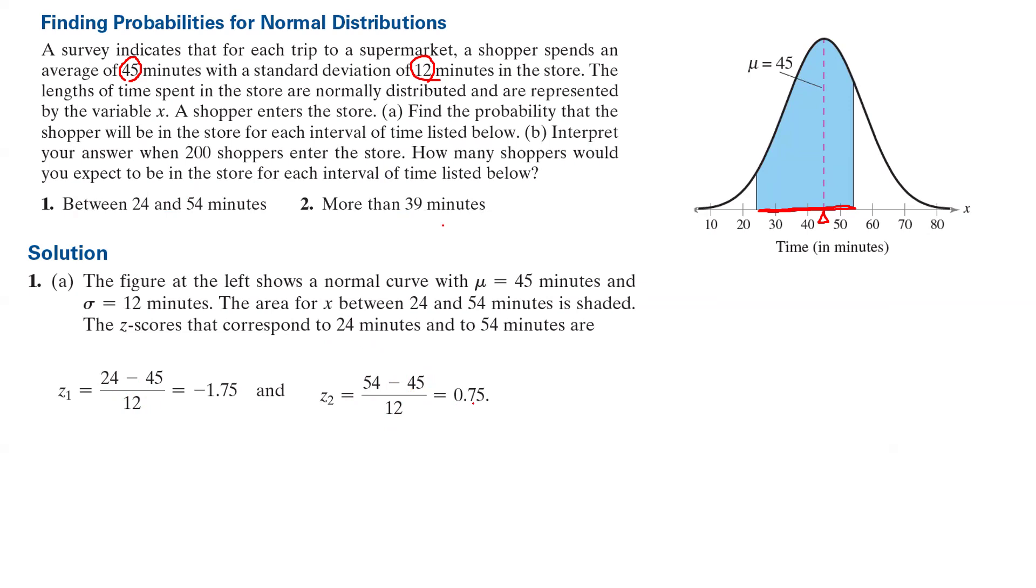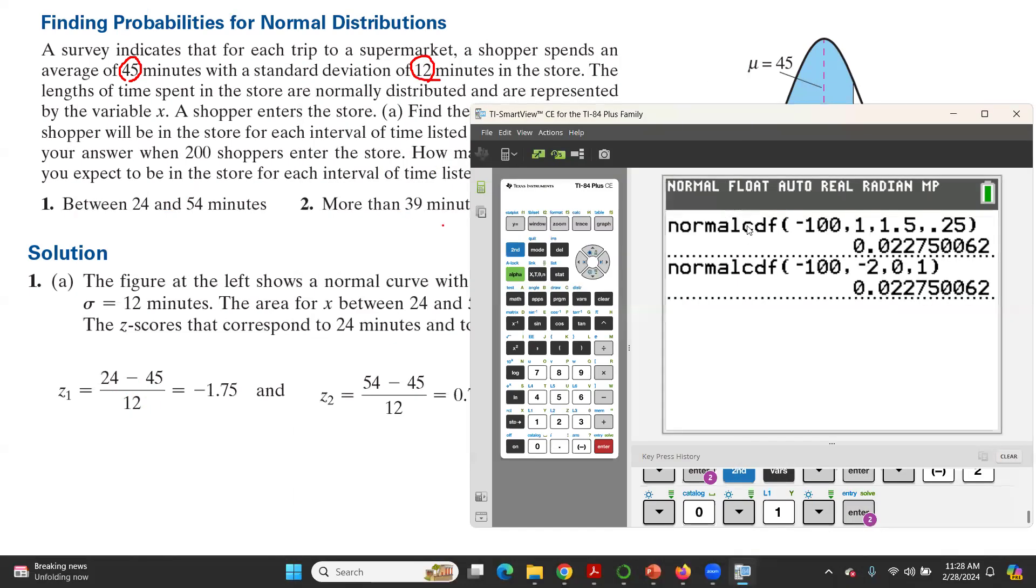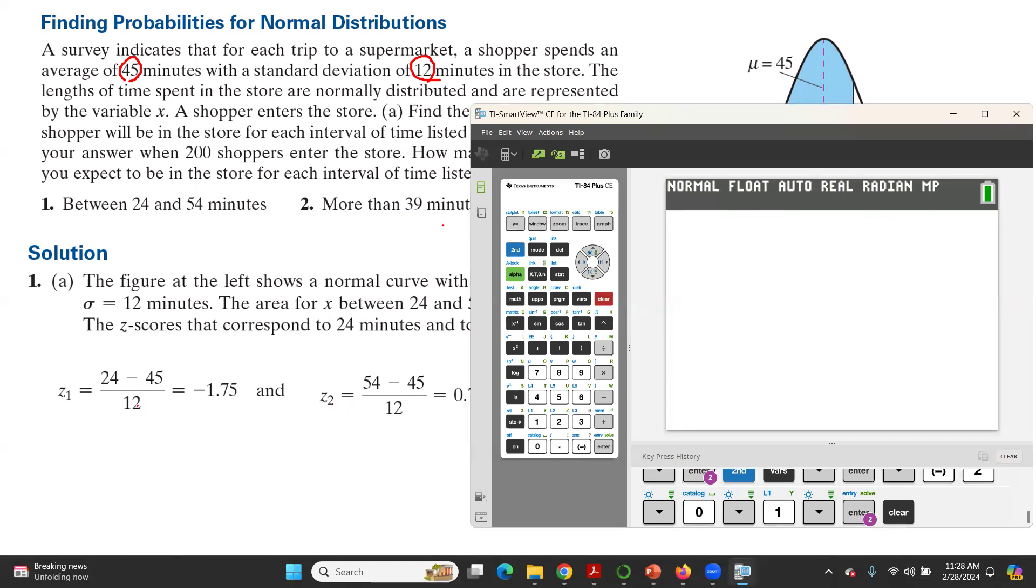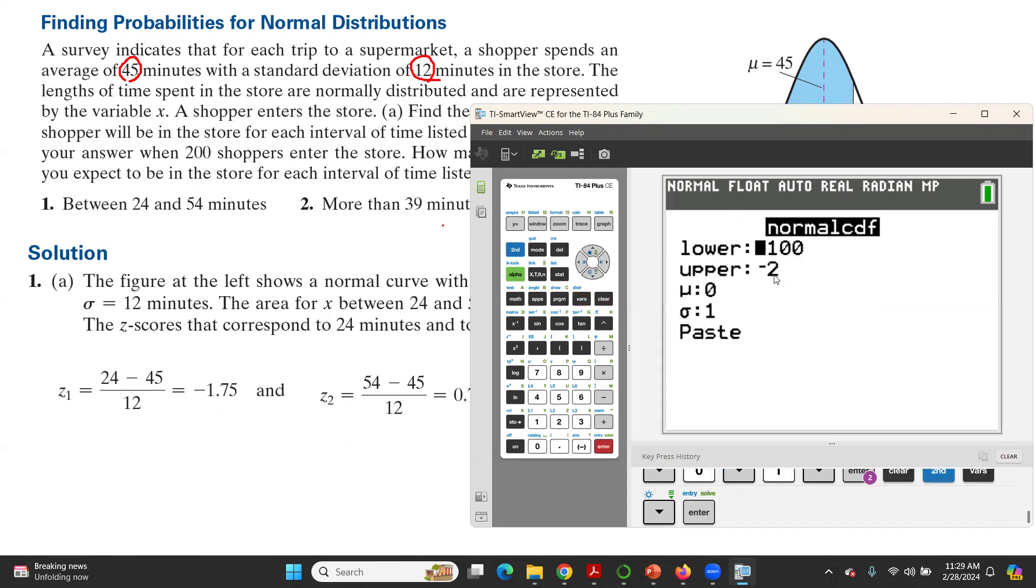Let us use our calculator and show you how to do the computation here. In using your calculator, if you're dealing with z, you're going to enter z but make sure you enter correct information. Second DISTR and find normalcdf. The lower bound is negative 1.75.